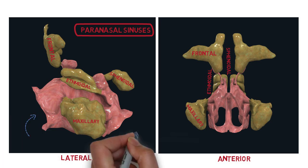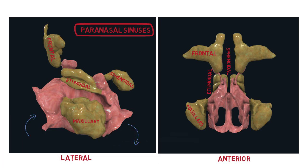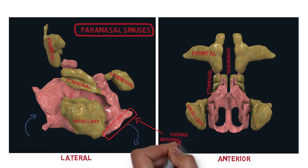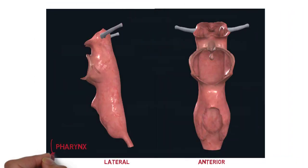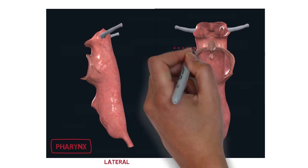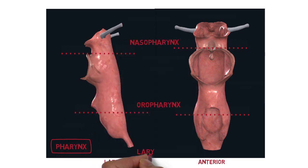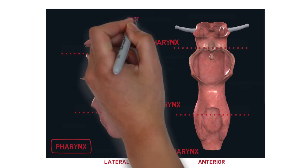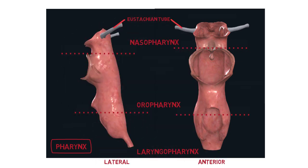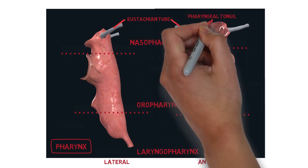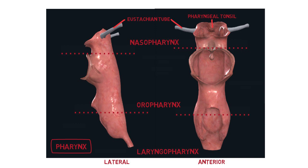Air entering our nasal cavity will pass through into the pharynx through the choanae, also known as the internal nares. It connects our nasal cavities with the nasopharynx, which is the superior portion of our pharynx. We can divide our pharynx into three: namely the nasopharynx, oropharynx and laryngopharynx. The structures related to the pharynx are the eustachian tube, which connects the middle ear with the nasopharynx, and just in close proximity to it, we have the pharyngeal tonsil.